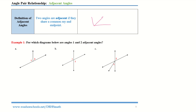So if I have two angles here, angle A and angle B, this is going to be our common ray. And then this right here is the common endpoint. Adjacent means that they're next to each other — side by side. That's another way to think about the word adjacent.